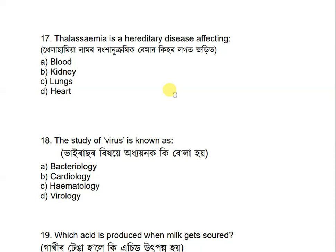Question 17: Thalassemia is a hereditary disease affecting which part of the body? Options are: blood, kidney, lungs, and heart. The correct answer is blood.